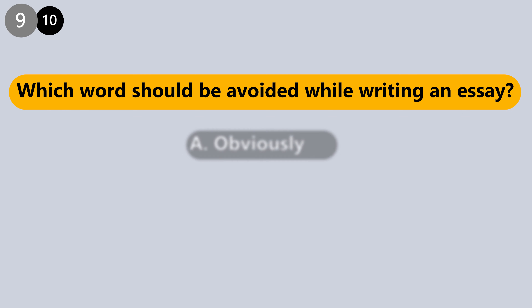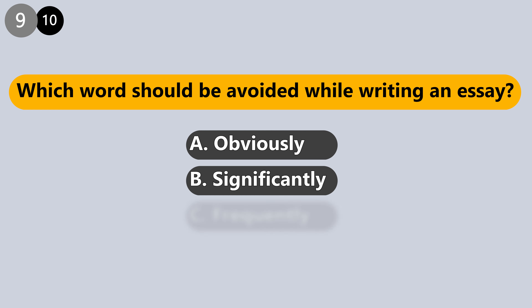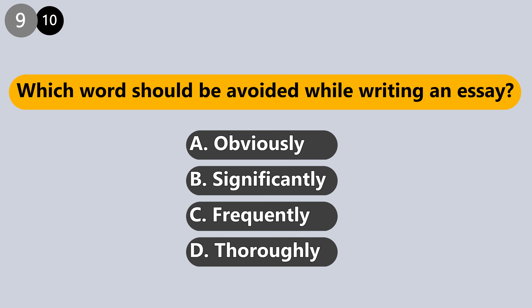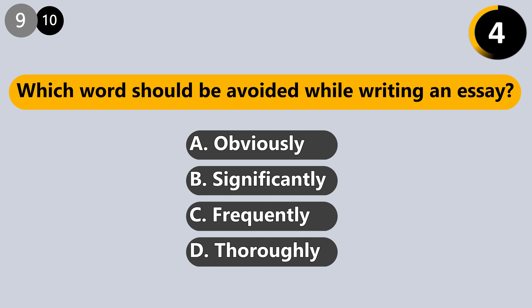Which word should be avoided while writing an essay? Is it obviously, significantly, frequently, or thoroughly? The answer is: obviously. Some words and phrases reveal your own bias. For instance, if you state that something will obviously happen, you are indicating that you think the occurrence is obvious, not stating a fact. Try to let the facts speak for themselves.